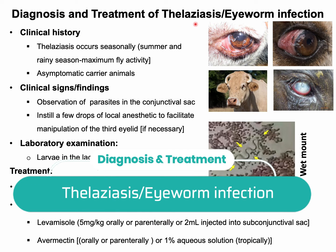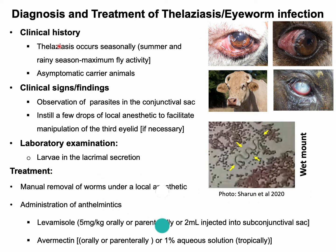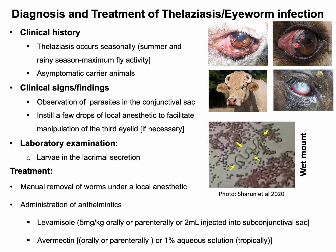For diagnosis, season is considered an important factor, as more fly activity — and thus more transmission — is seen in summer and rainy seasons. Asymptomatic carrier animals also act as a source of infection for healthy animals. There is no specific pathognomonic clinical sign for telagiosis. Observation of worms in the conjunctival sac confirms the eyeworm infection.